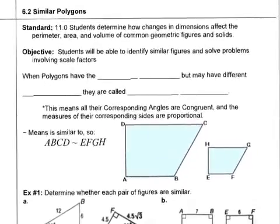Okay, 6.2, similar polygons. Students will be able to identify similar polygons and solve problems involving scale factors. This is why we needed to learn the ratios that we learned last time.